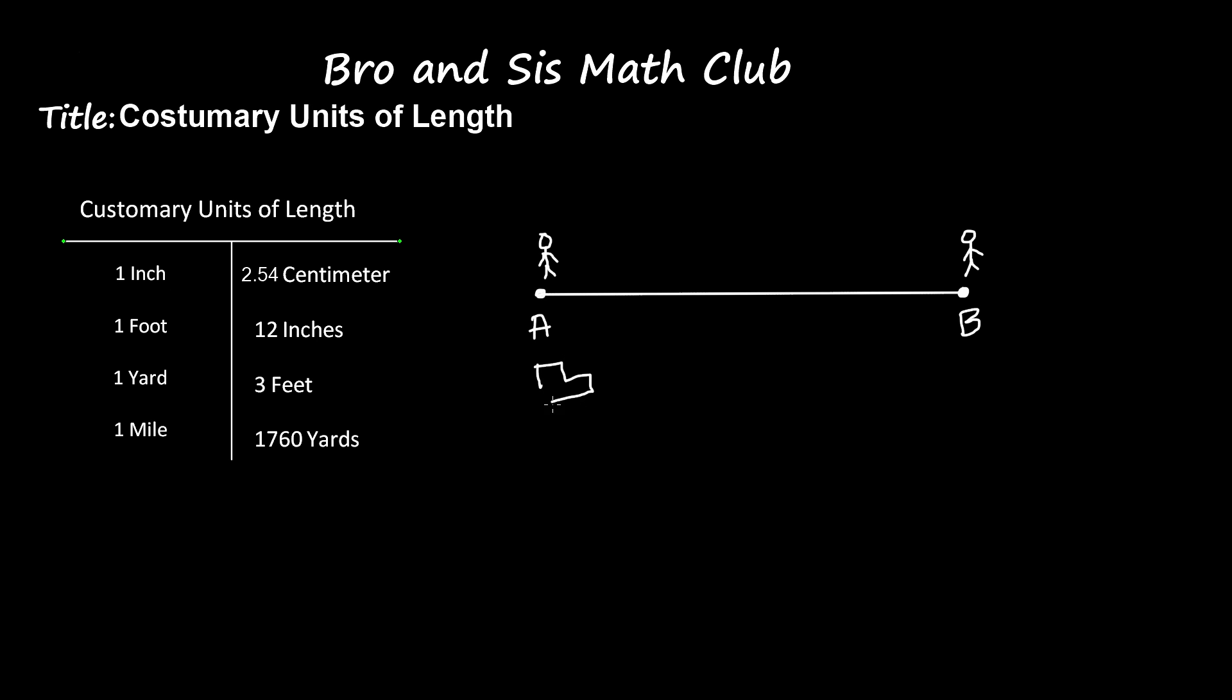Point A could represent a car and point B could represent another car, so you're trying to find the distance between these two cars. So there are different units of length, and here are the four basic customary units.